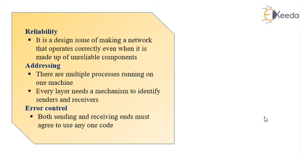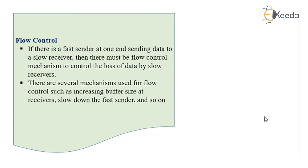Error control: both the sending and receiving ends must agree to use any one code. Flow control: when there is a communication between two terminals, if there is a fast sender and a slow receiver, then there must be a flow control mechanism to control the loss of data by slow receivers. There are several mechanisms used for flow control, such as increasing buffer size at receivers.